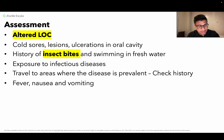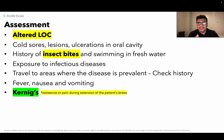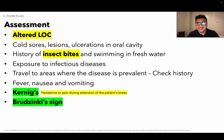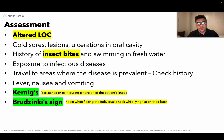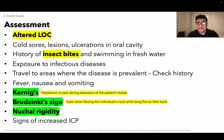Two to three important signs to remember: first is Kernig's sign — there is resistance or pain during extension of the patient's knees. Second is Brudzinski's sign — there is pain or resistance when flexing the individual's neck while lying flat on their back. Also note nuchal rigidity and signs of increased intracranial pressure.